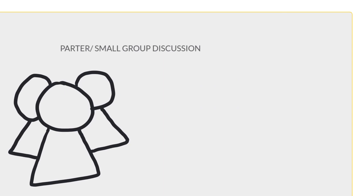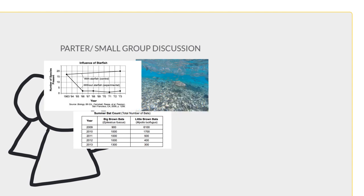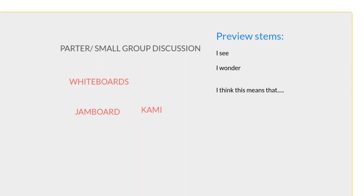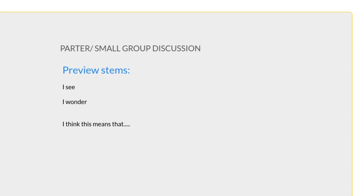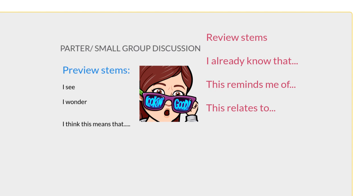The next step is partner or small group discussion with scaffolds. Using sentence stems, give students an image, chart, or text. In our digital world, you can use programs such as Jamboard or Screencastify, breakout rooms in Zoom, different links for Google Meet, or an online whiteboard. Notice that the preview stems and review stems are different: preview is for students to describe what they see, so everyone can say something about the picture and headlines. Review, on the contrary, allows students to make connections.